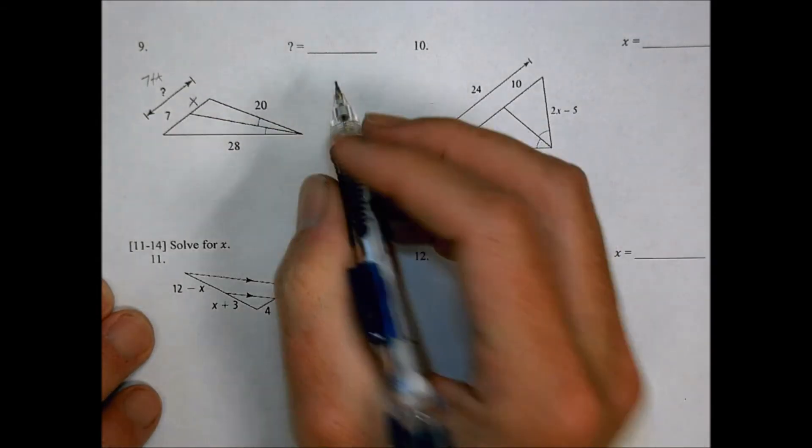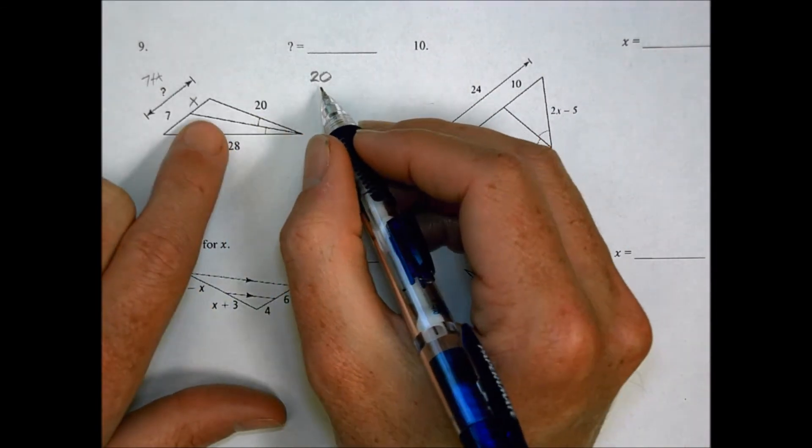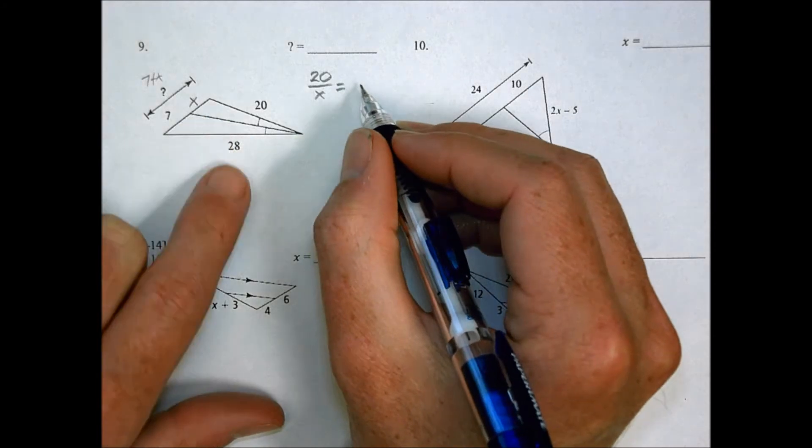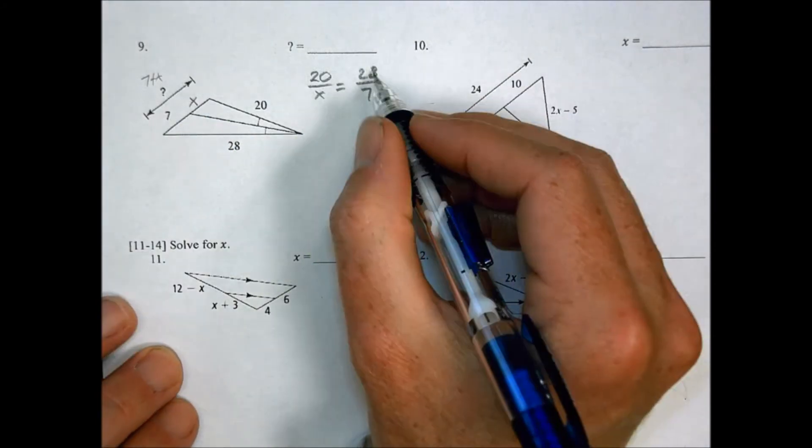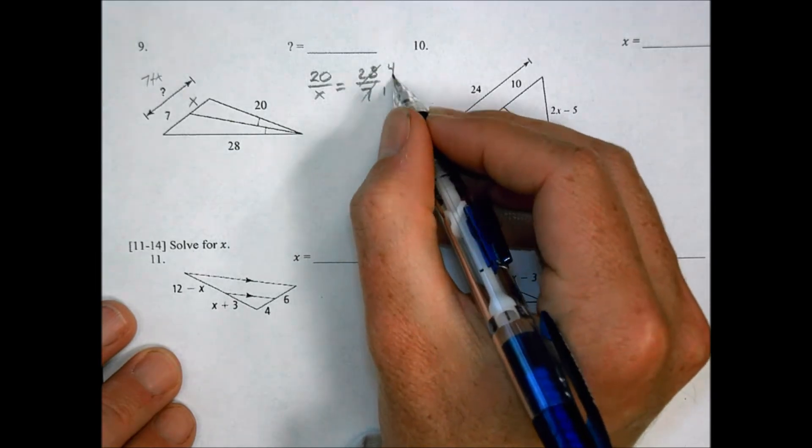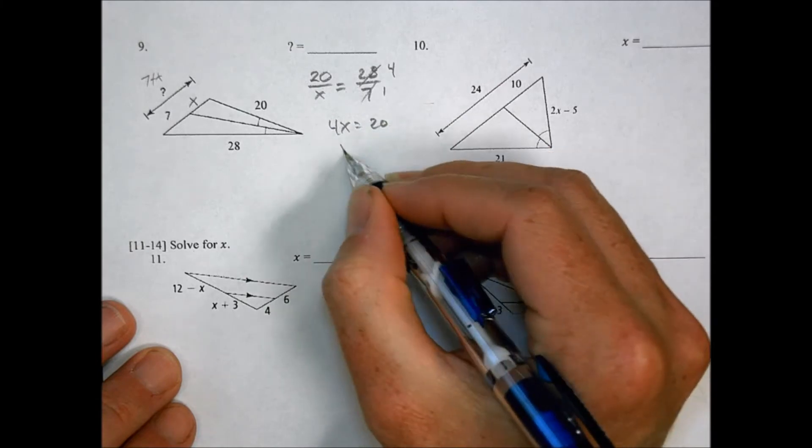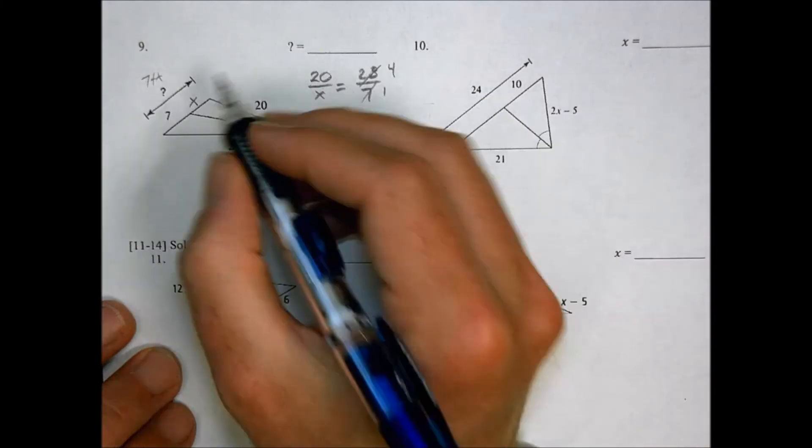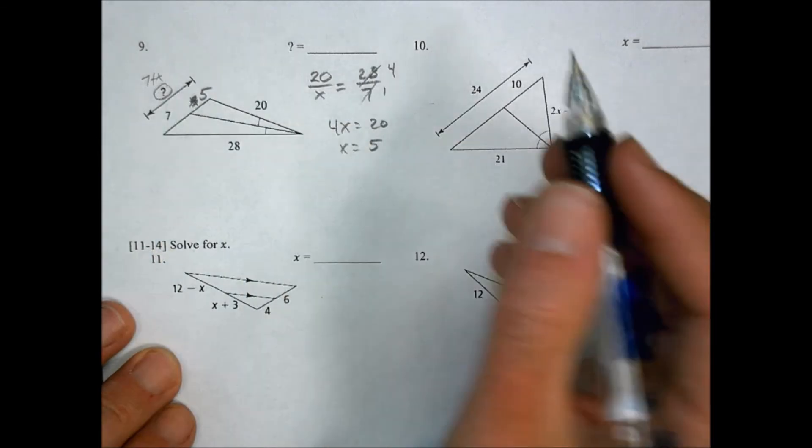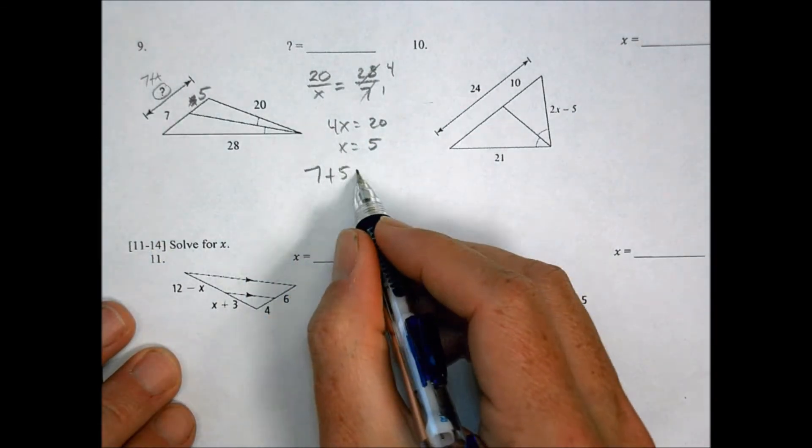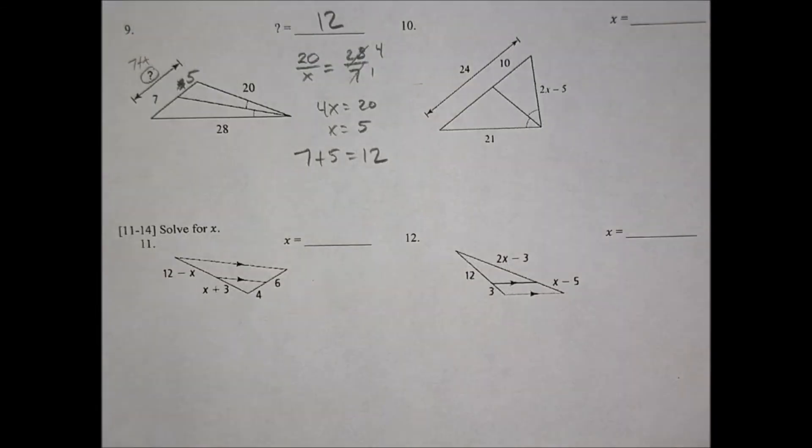This becomes an x, and this becomes 7 plus x to find out the question mark, so don't get too quick for your work. So if we said 20 is to x as 28 is to 7, I could reduce 28 over 7. 7 goes in here 4 times, cross multiply, we have 4x equals 20, and x then equals 5. So if this is 5, I put that in there, the question is what's the whole length? That's going to be 7 plus 5, which is 12, so don't skip that extra step right there when you're doing your work. Be careful.